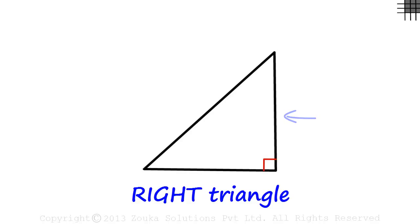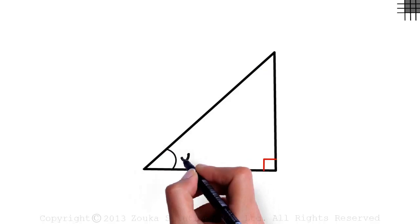This right triangle is right angled at this vertex. The good news is that one angle is known and only two remain. Let this angle be theta.